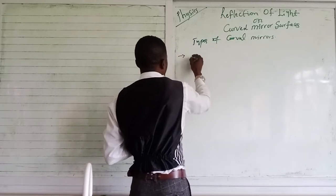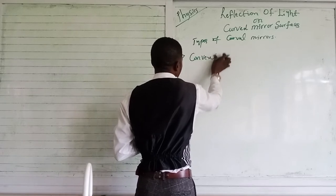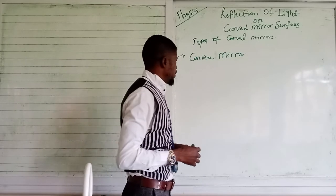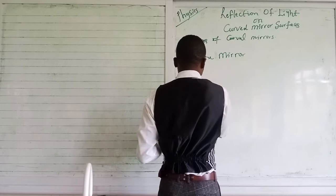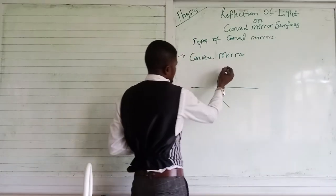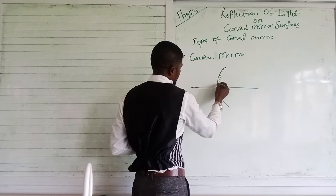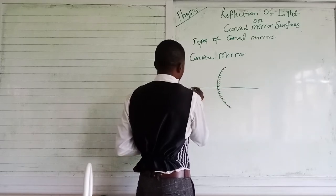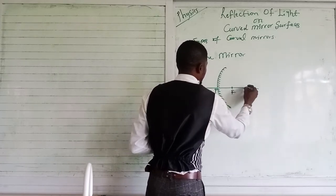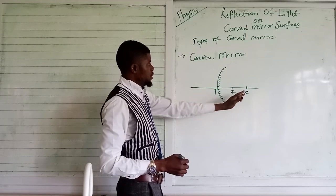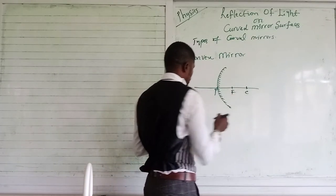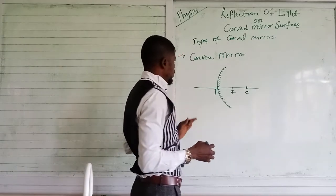We have the convex mirror, also known as the divergent mirror. The convex mirror has a reflecting side facing outward. Here is the pole of the mirror, here is your F (focal point), and here is your C (center of curvature). The distance from the pole of the mirror to the center of curvature is called the principal axis.